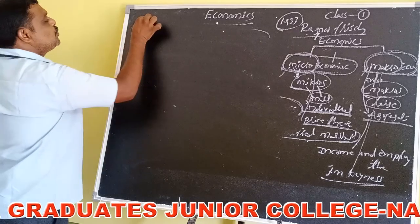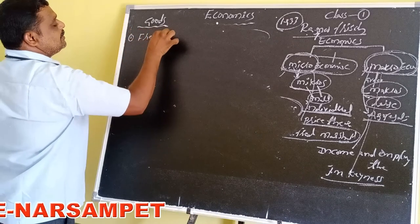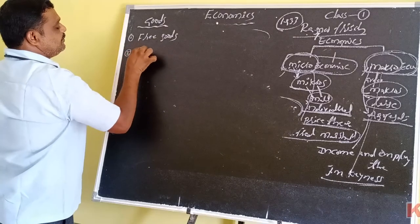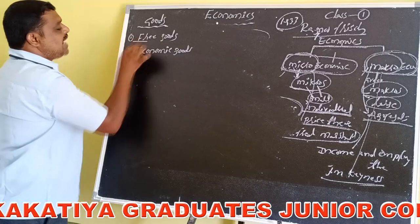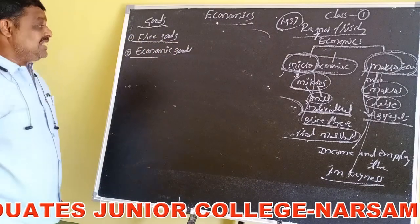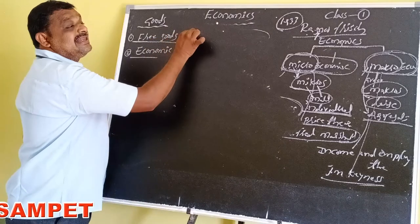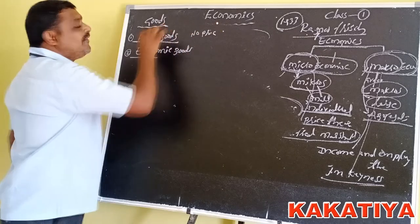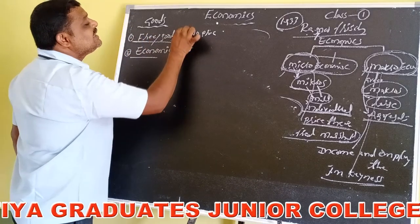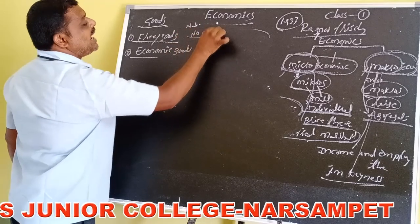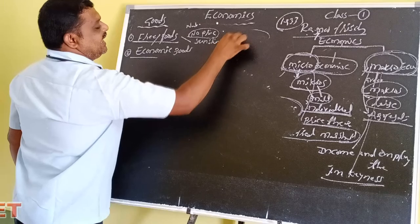Goods are of two types: free goods and economic goods. Free goods are goods which are supplied by nature and have no price. Examples of free goods are sunshine and air.